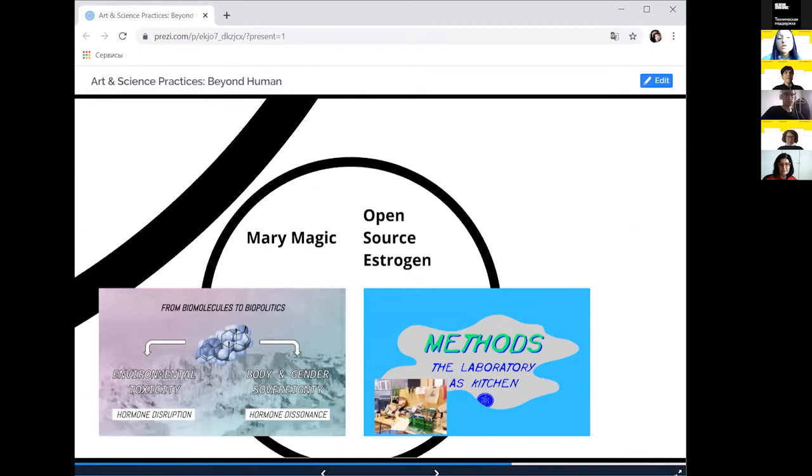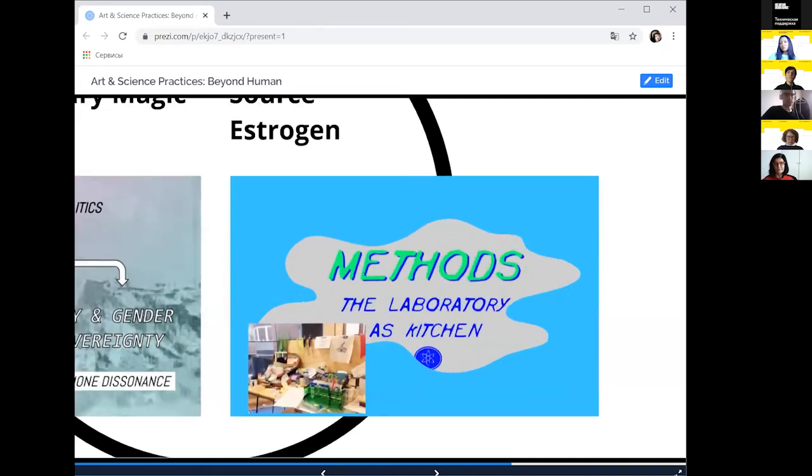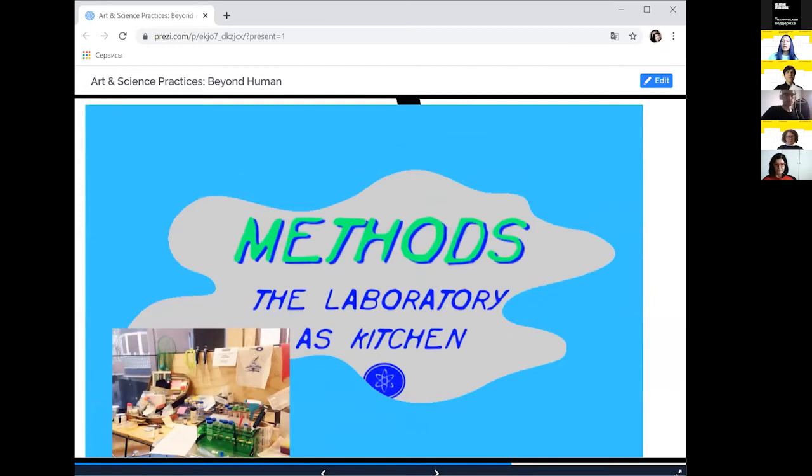The next project, which is really important and relevant to me, is Open Source Estrogen by Mary Magick. The artist was inspired by Testo Junkie by Paul Preciado. Preciado describes taking testosterone as a political action. And in Open Source Estrogen, artist presents DIY biopractices as a form of civil disobedience. She's developing DIY and do-it-with-others protocols of estrogen extraction in response to the various biopolitics of hormonal control on female and trans bodies prescribed by governments and institution. This is a speculative project. The artist assumes that that kind of DIY protocol can be done. And she's exploring and developing different DIY approaches to the estrogen extraction.